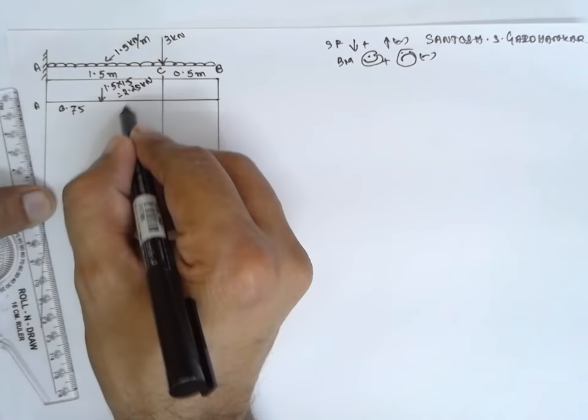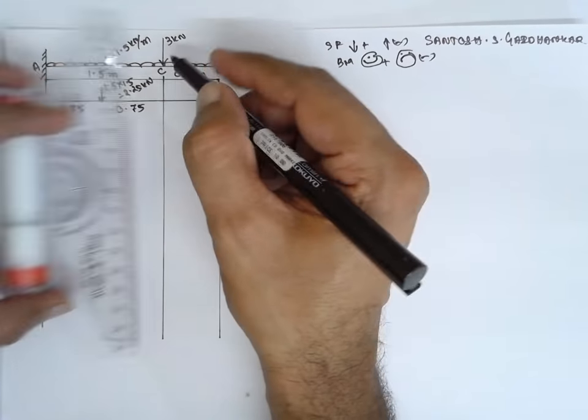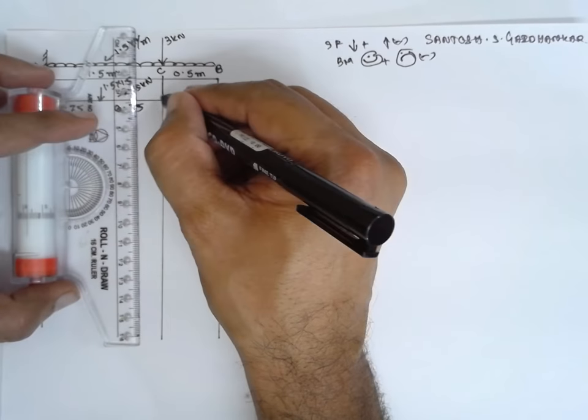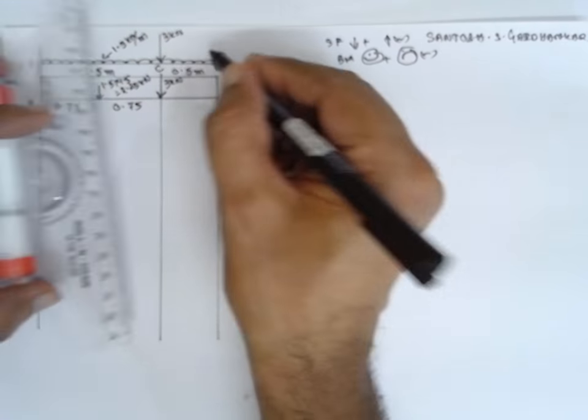0.75 from this side, 0.75 from this side. Similarly, there is a point load acting here at C. At C, there is a point load, 3 kilonewton. Similarly, there is a UDL here exactly at the center.